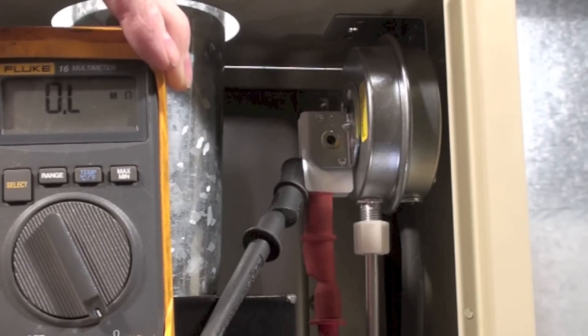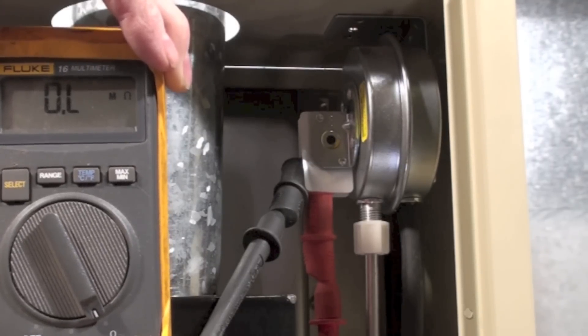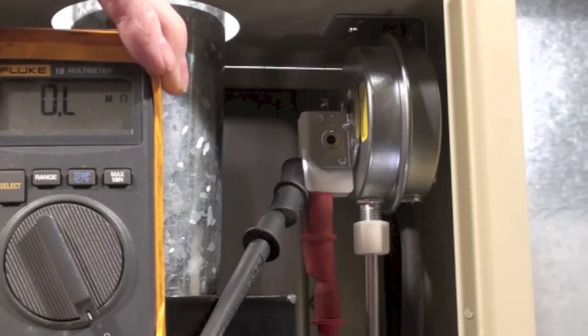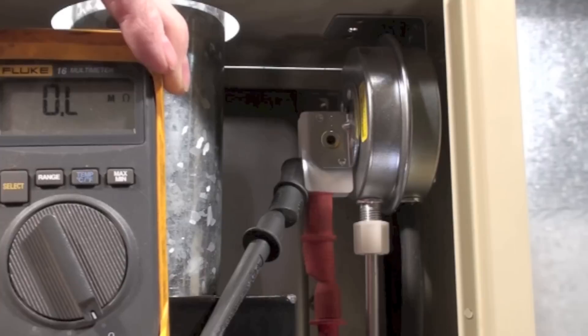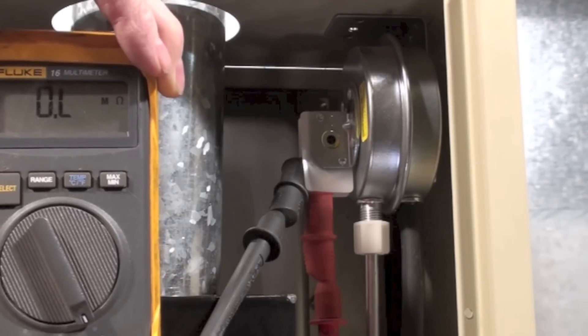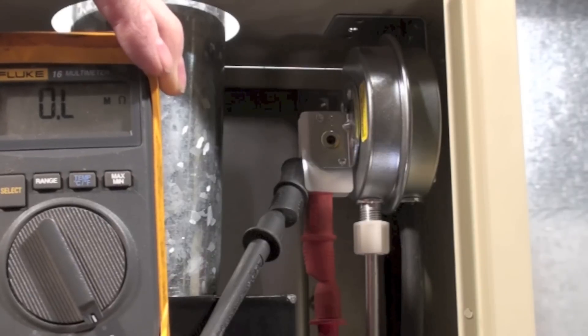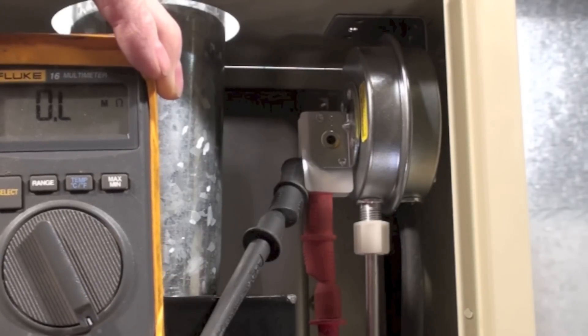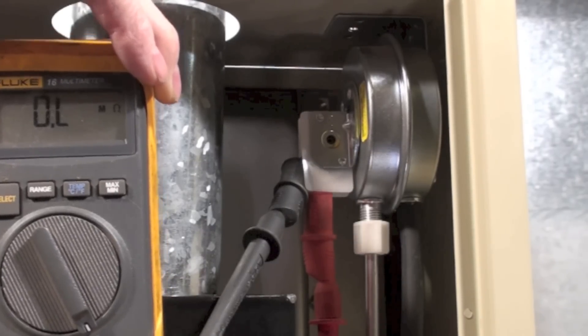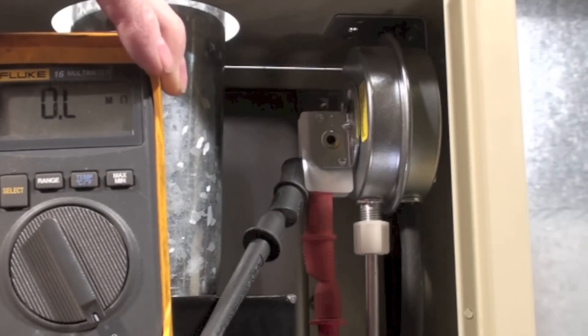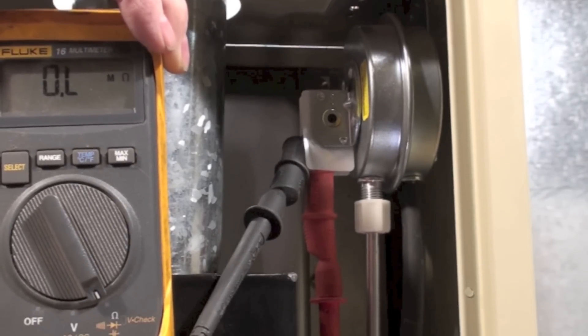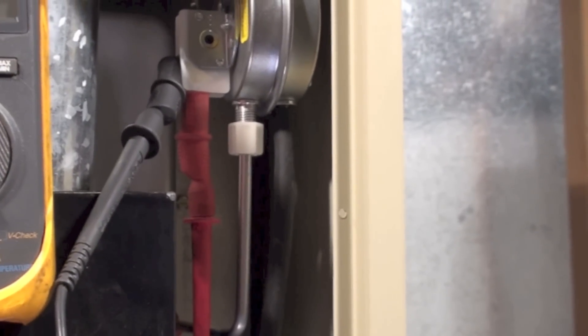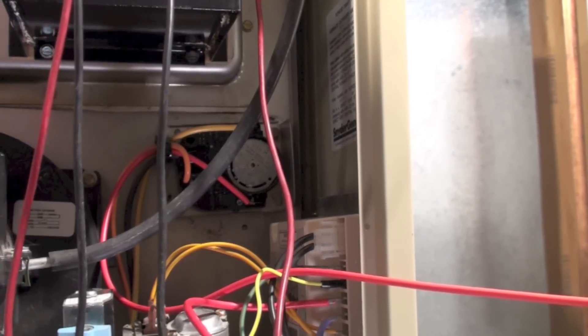then the next thing is you've got to start looking at the switches in series with it. Once that inducer comes on, or in this case forced draft blower, once that forced draft blower comes on, you know it's on, it's ready to go, there's power to start it. And then it could be the centrifugal switch inside the combustion blower that's right there, or it could be the pressure switch, and it could be that limit switch that's kicked off there.